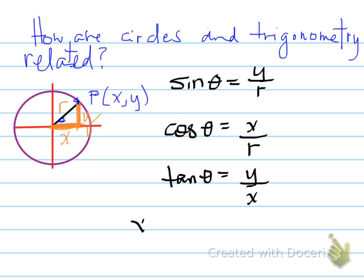The last thing to remember is the relationship that x, y, and r have with each other: x squared plus y squared equals r squared. That's determined from the Pythagorean theorem, which can only be used in a right angle triangle.